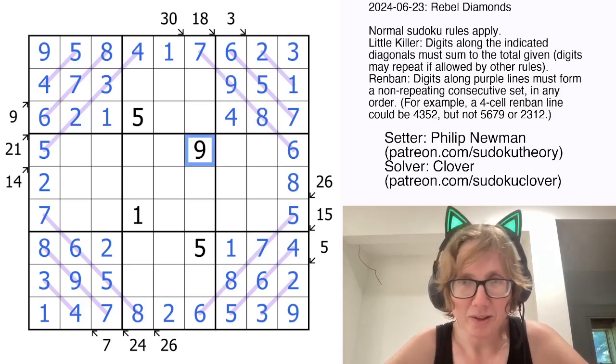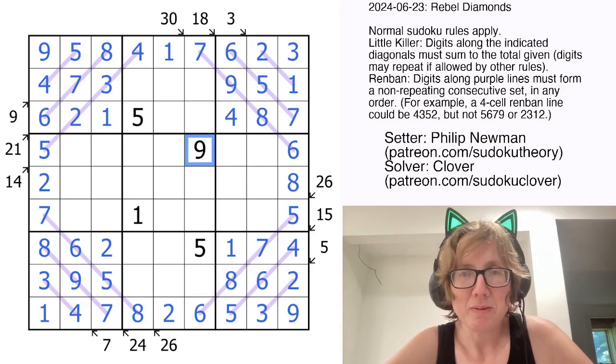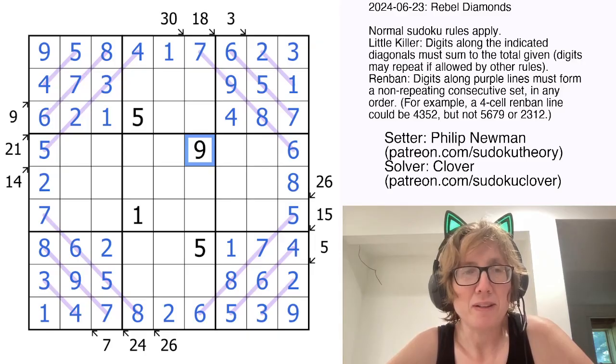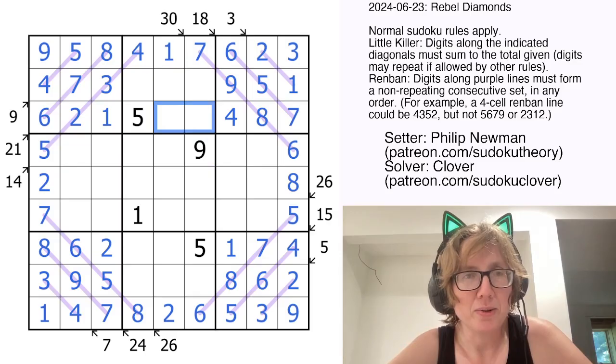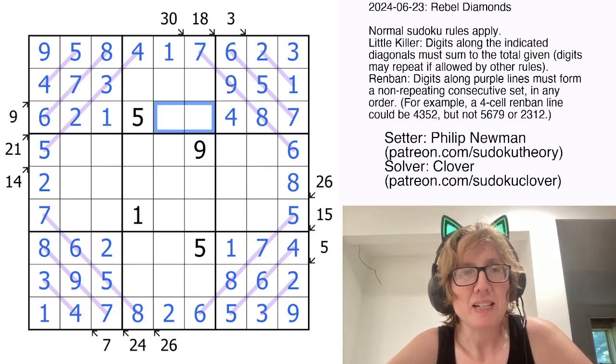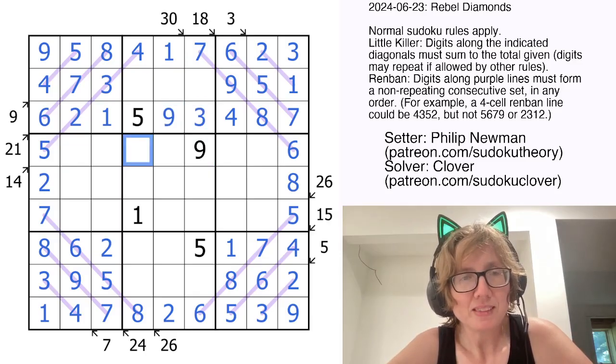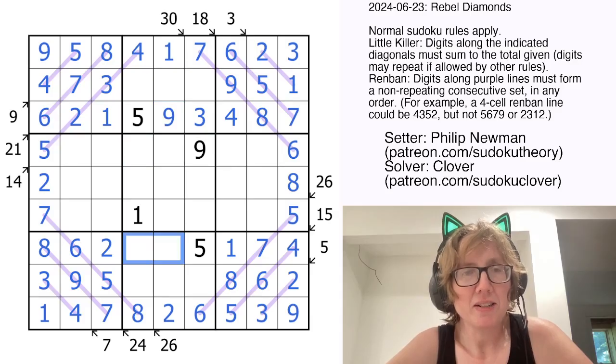So now we have resolved all of our bi-values and tri-values, and we really just have to finish using classic Sudoku. So here we need a 3 and a 9 to finish the row. Those go in that order, because of the 9 here. Here we need a 3 and a 9 to finish this row. Those go in that order.